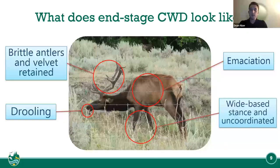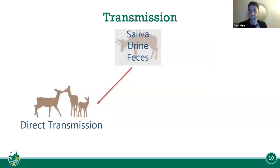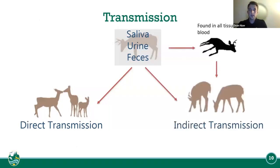So for transmission, there are different avenues. Direct transmission could be through saliva — that could be through nose-to-nose contact when a deer, elk, or any cervid touches noses with another animal, transferring saliva.